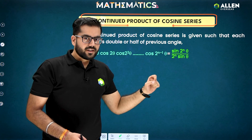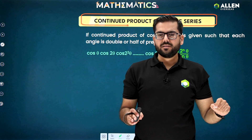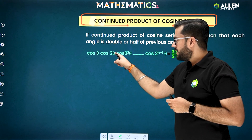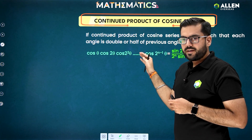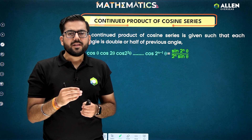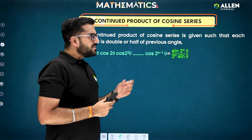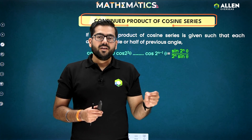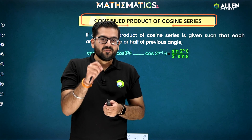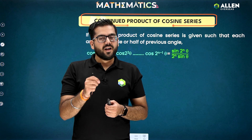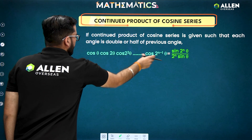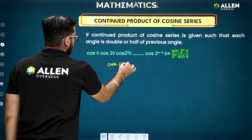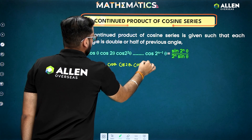If the continuous product of cosine series is given such that each angle is double or half of the previous angle, we should understand the pattern. The pattern is simple: if you have angles like 2^0, then 2, then 2², and so on — it is getting doubled. In that case, I am going to apply one concept as a sparkle to get fire, and that sparkle is sin θ. So on the LHS I am going to pick cos θ · cos 2θ · cos 2²θ and so on.